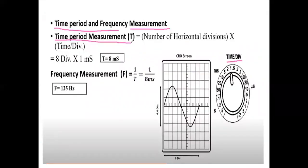Next: time period and frequency. The time period measurement is equal to the number of horizontal divisions multiplied by the time per division. In that waveform, counting 1, 2, 3, 4, 5, 6, 7, 8 — there are a total of 8 divisions required to complete one cycle. With the time per division knob set to 1 millisecond, the time period T = 8 divisions × 1 millisecond = 8 milliseconds.